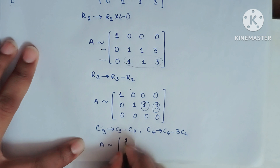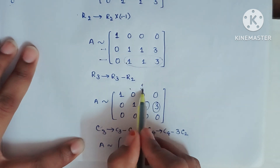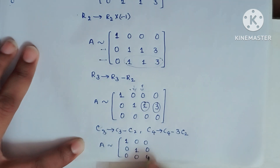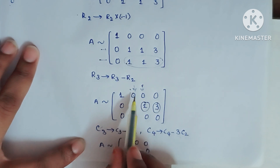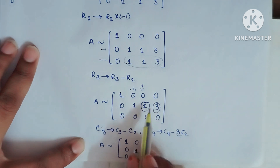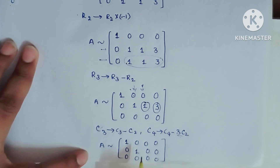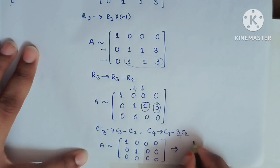There is no change in C1 and C2, so we write them as they are. For C3 − C2: 0−0=0, 1−1=0, 0−0=0. For C4 − 3×C2: 0−3×0=0, 3−3×1=0, 0−3×0=0. We have now obtained this final matrix.